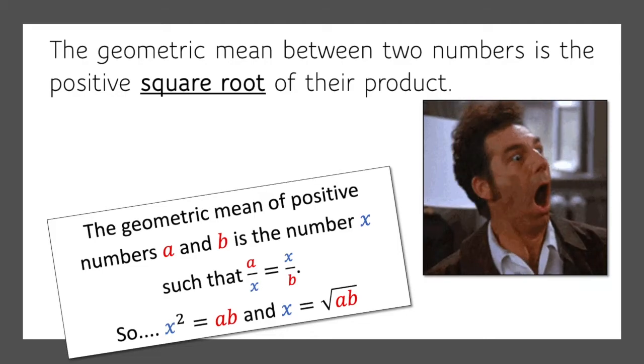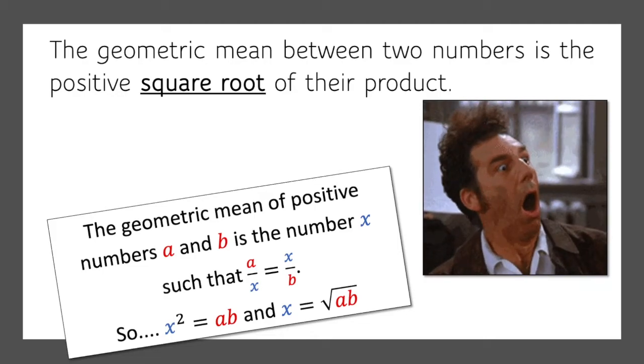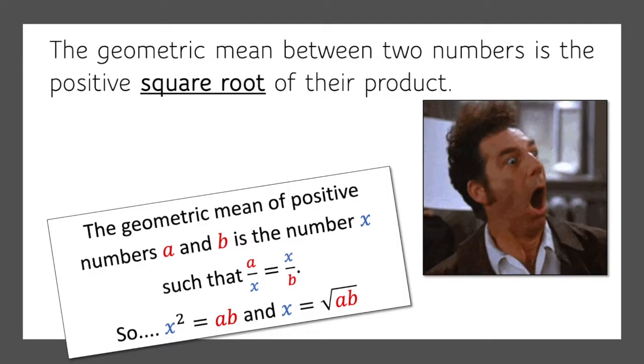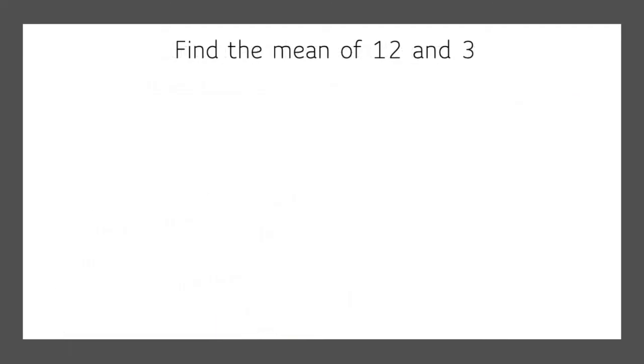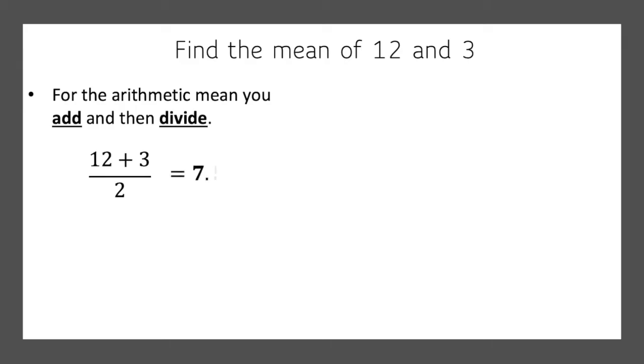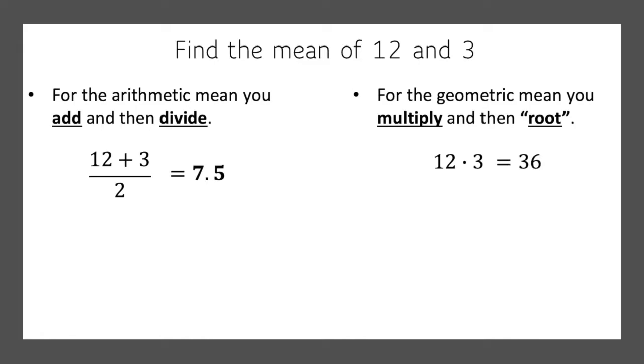Whoa, what the heck does that mean? Let me show you. First of all, let's find the mean of 12 and 3. Now if you find the arithmetic mean, that's kind of what you're used to, the average of 12 and 3, you would add then divide. So you would take 12 plus 3, divide it by 2, which is 7.5. Now for the geometric mean you multiply and then root. So you would take 12 times 3 which is 36, and then the square root of that is 6. That's the geometric mean.